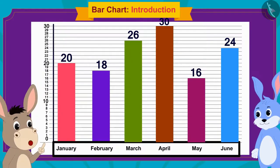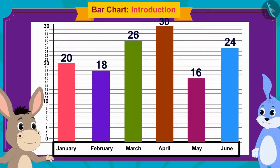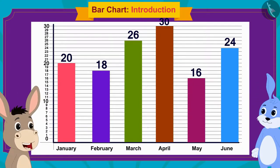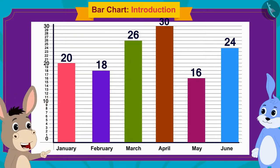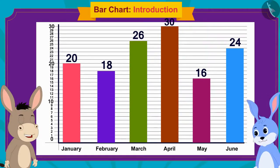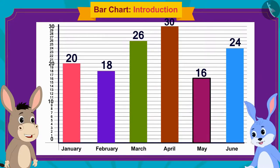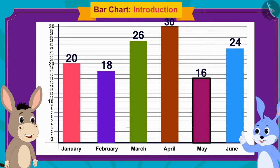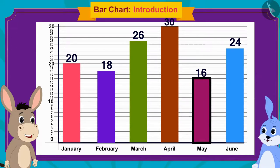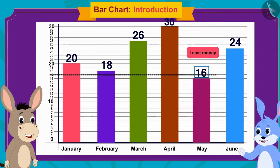Bholla asked Bunny if he could now tell in which month he saved the least amount of money. Bunny said it had become very easy — the month of May has the smallest rectangle, which means he saved the least money: 16 rupees in the month of May.